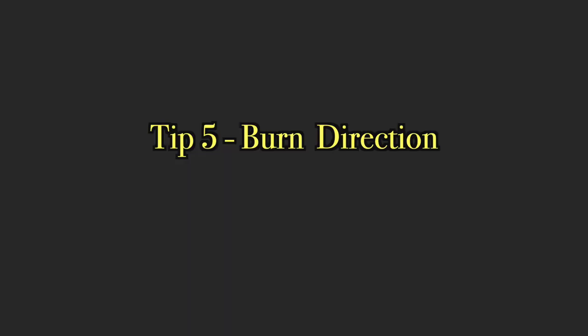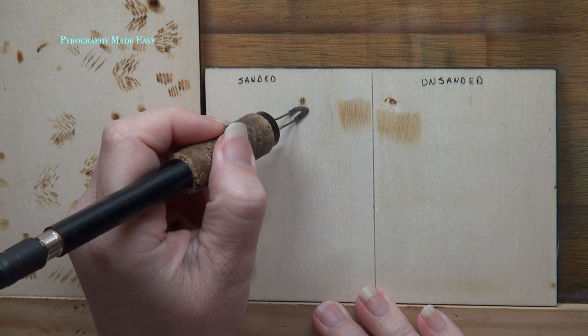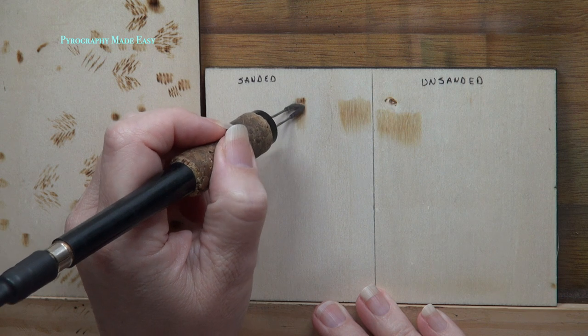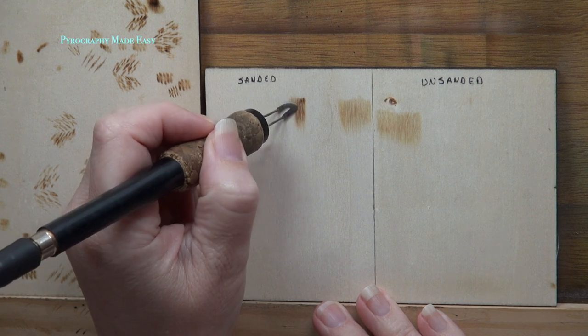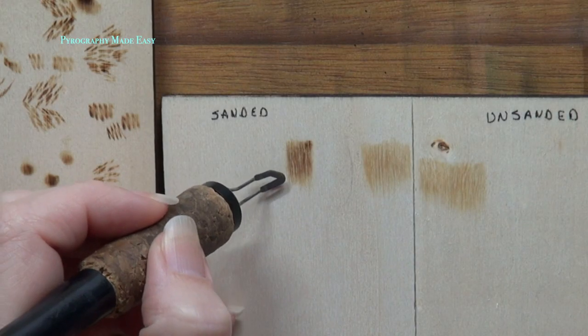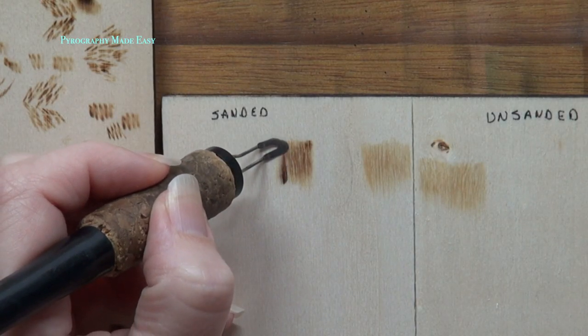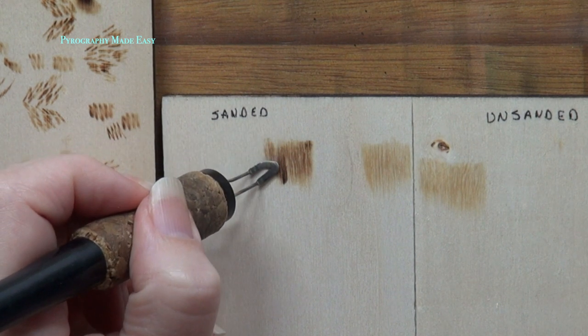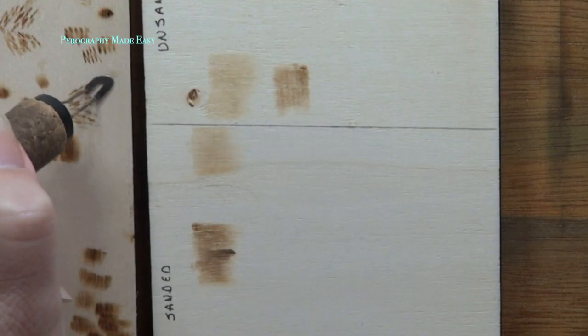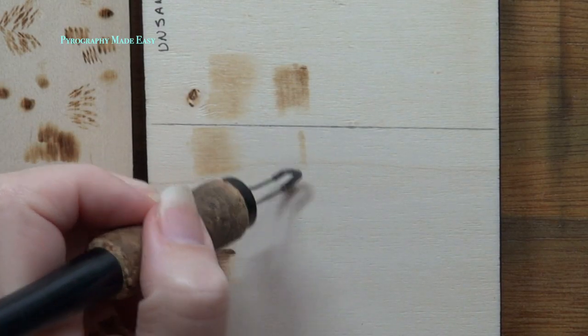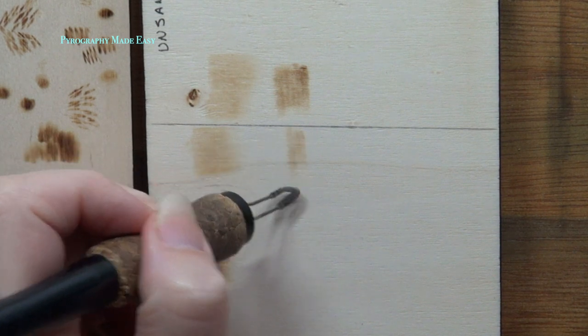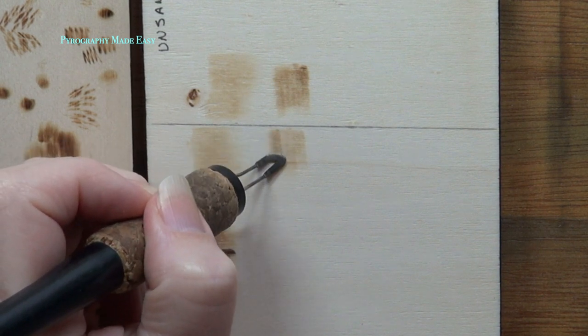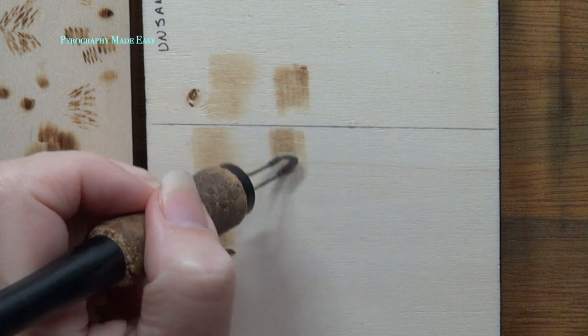Tip 5, burn direction. To get the smoothest burn results, pull the pen tip down towards yourself. It is much easier to keep a consistent hand pressure when burning in this direction. Avoid burning in a direction where you are pushing the pen tip up and away from yourself. It is much harder to keep a consistent pressure in that direction. Another thing to keep in mind, it is easier to burn with the grain than against it. I am currently burning against the grain and the results aren't quite as smooth. When possible, burn with the grain for the smoothest results.